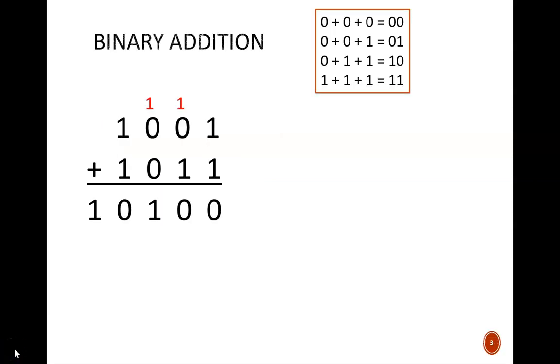Longhand addition in unsigned binary can look like this. Here we see two 4-bit numbers. In order to add them together, we work column by column from right to left. There are only a handful of possibilities for a sum from any column, as outlined in this box.